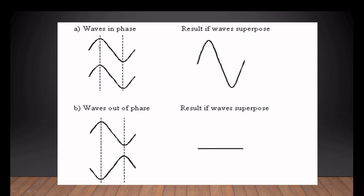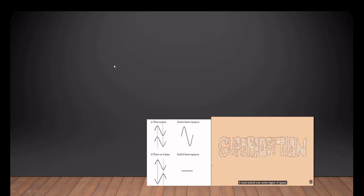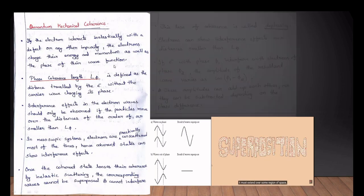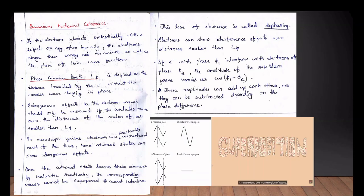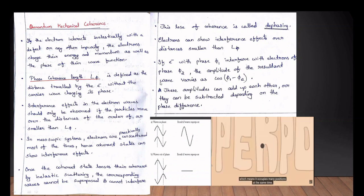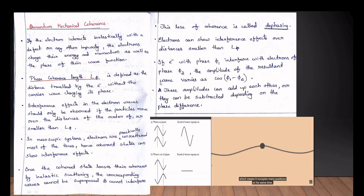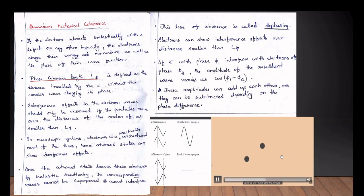Electrons have wave-like properties. That's why we consider these waves — we use the same phase of electrons. The superposition is wave-like or particle-like. These two properties can be exhibited at the same time.